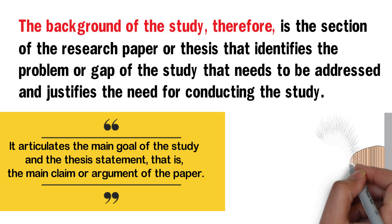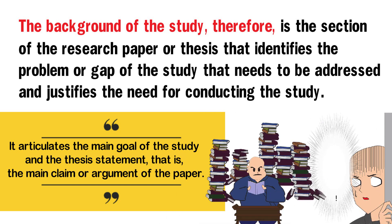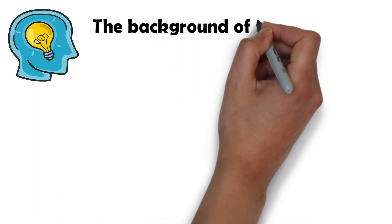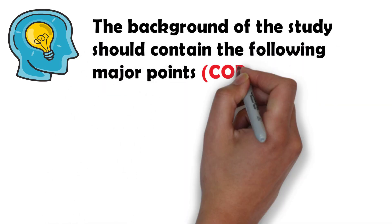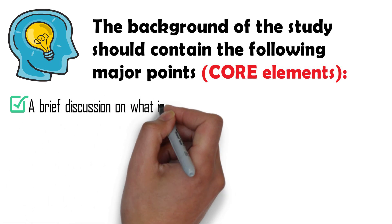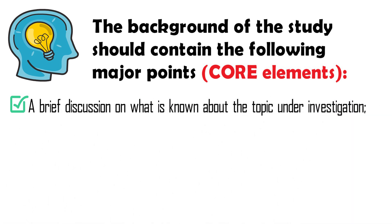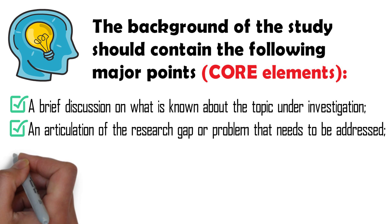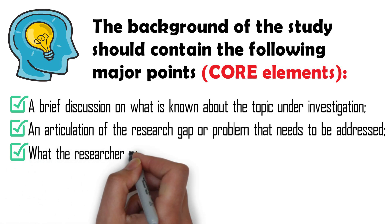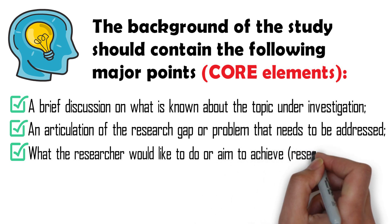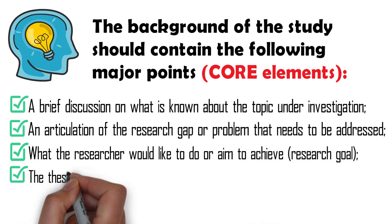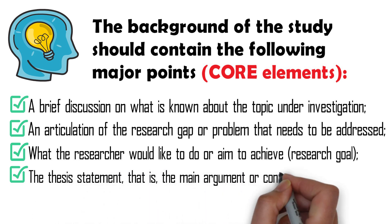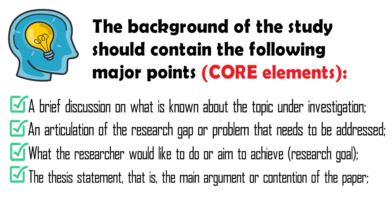Given this brief understanding of the background of the study, we can anticipate what readers or thesis committee members expect from it. The background of the study should contain the following major points: a brief discussion on what is known about the topic under investigation; an articulation of the research gap or problem that needs to be addressed; what the researcher would like to do or aims to achieve in the study — the research goal; and the thesis statement, that is, the main argument or contention of the paper.